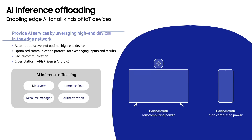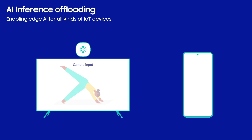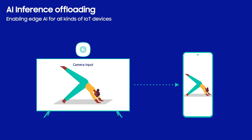AI inference offloading service framework enables low-end IoT devices to provide AI services without a cloud network connection. For example, if you want to provide an AI-based home training service on a TV with low computing power, you can make it happen with the AI inference offloading framework. The TV locates the best device in the local network to be used for AI service and transmits the trained AI model to the target high-end device. A sequence of image data captured by a camera on the TV is sent to the destination device to request inference. The high-end device executes inference based on the received model and image data, and returns the result to the TV device. Through this seamless process, real-time AI services can effortlessly reach even low-end IoT devices.